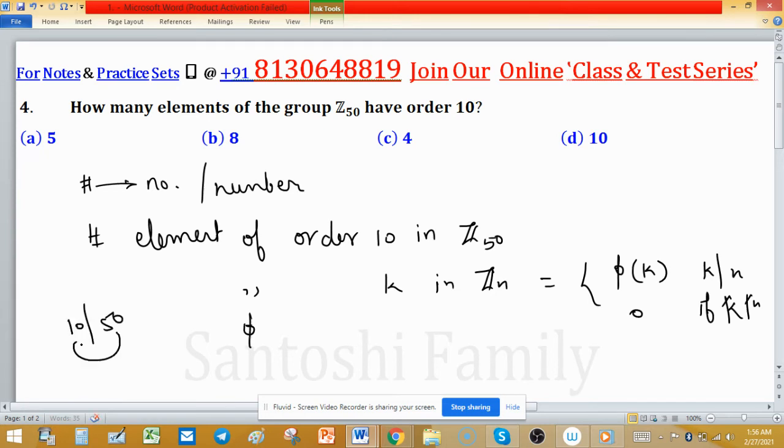...or 50 is divisible by 10, the number of elements of order 10 can be easily evaluated by this formula. φ(10) is 4 because 1, 3, 7, 9 these are coprime with 10, and we have these four elements.